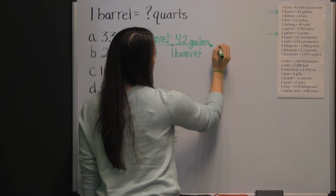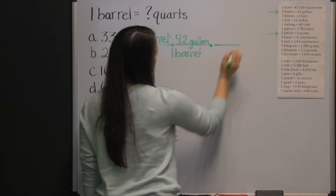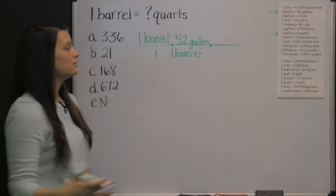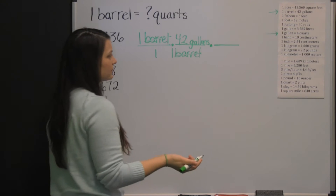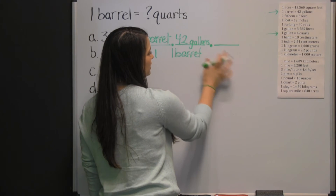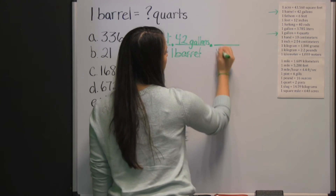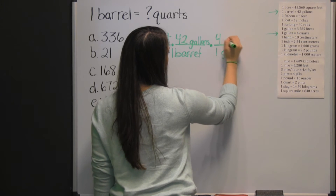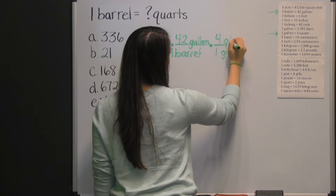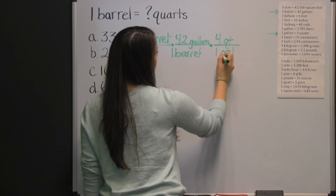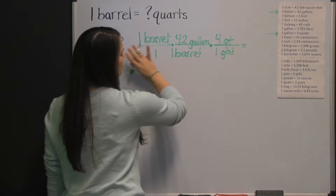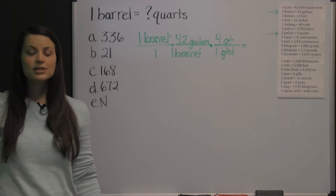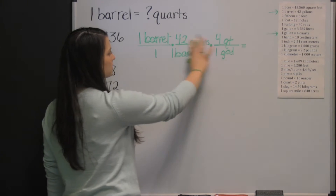Then we're going to multiply again by our other conversion factor for converting our gallons into quarts. Again, we want those units to be in diagonal position. One gallon is four quarts. Our gallons cross-cancel, and we can just multiply straight across — we're just multiplying fractions.